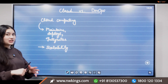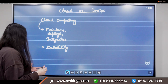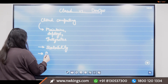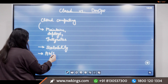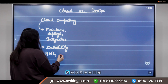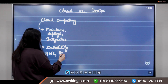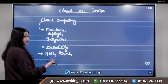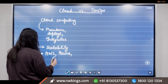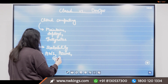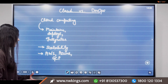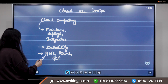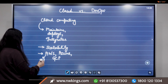Some of the most popular cloud computing service providers in the industry include Amazon Web Services (AWS) by Amazon, Microsoft Azure, and Google Cloud Platform (GCP) by Google. AWS is the number one cloud computing service provider, followed by Azure and then GCP.